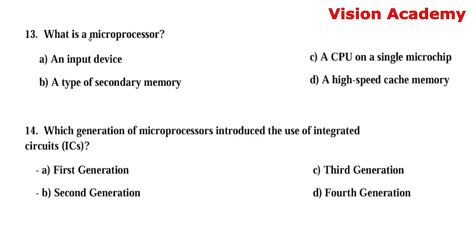Question number 13: What is a microprocessor? Option A: an input device. Option B: a type of secondary memory. Option C: a CPU on a single microchip. Option D: a high-speed cache memory. The right answer is Option C, a CPU on a single microchip.